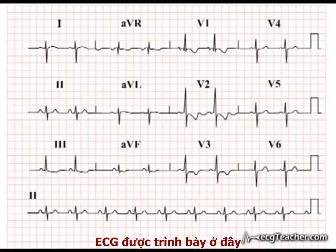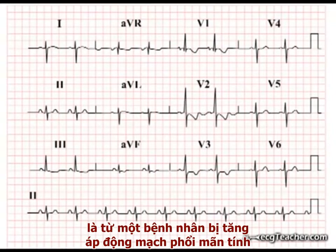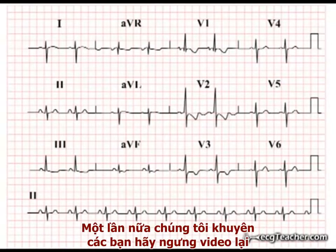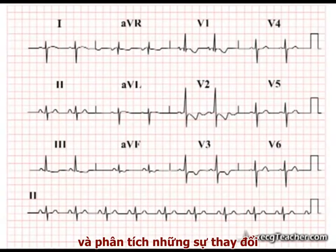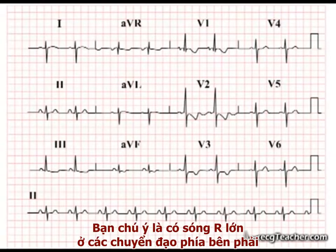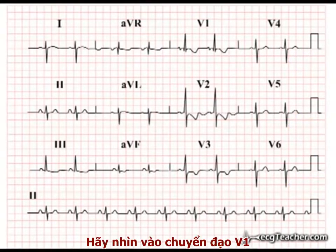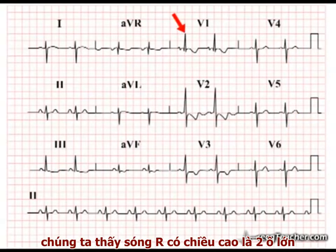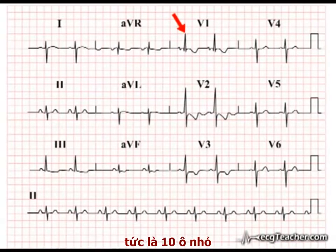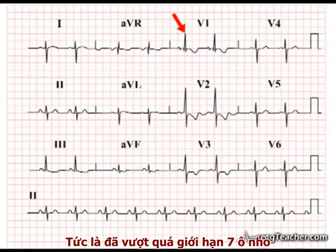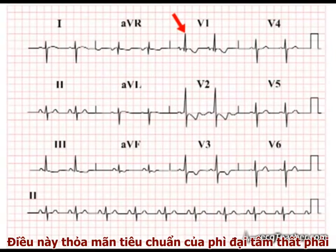The ECG shown here is from a patient with chronic pulmonary hypertension. Again, we would invite you to stop the video at this point and analyze the changes present. You will notice the prominent R waves in the right-sided chest leads and significant S wave activity in those on the left. When we examine lead V1, we find that the R wave is two large squares in amplitude, or ten small squares, well above our limit of seven small squares. This is consistent with underlying RVH.